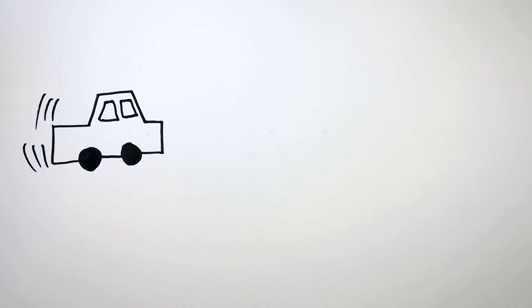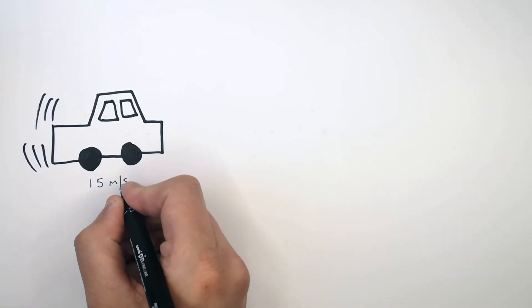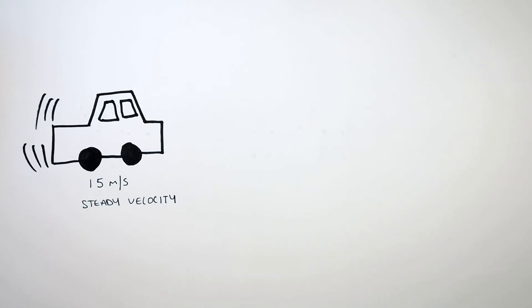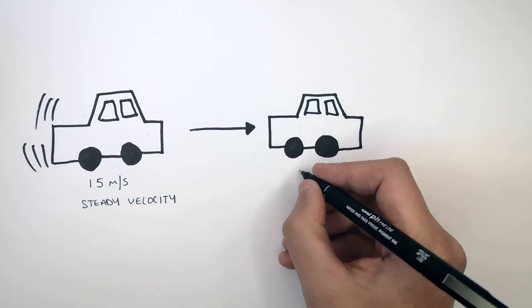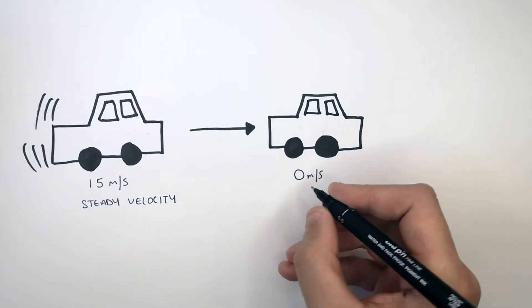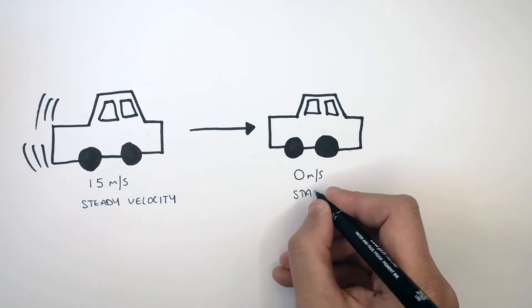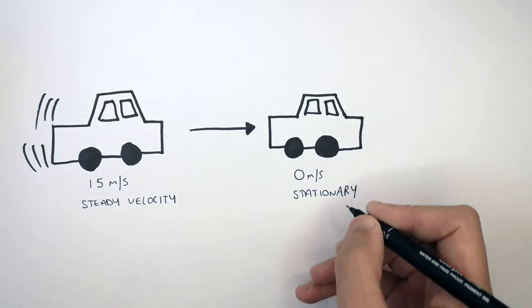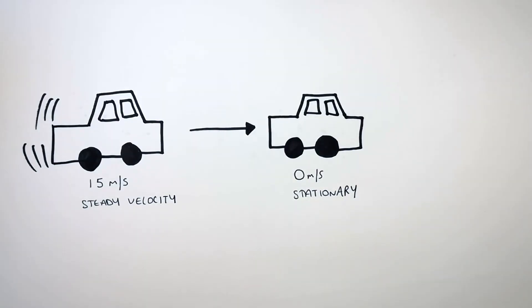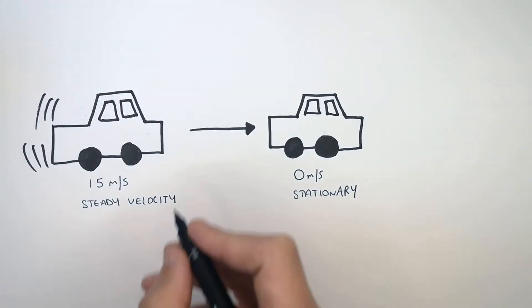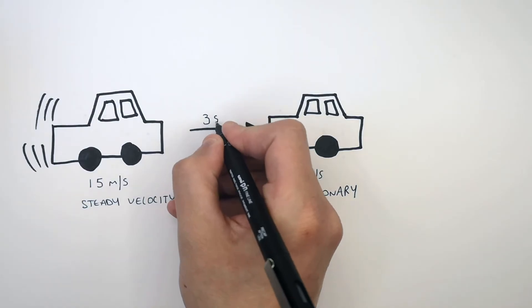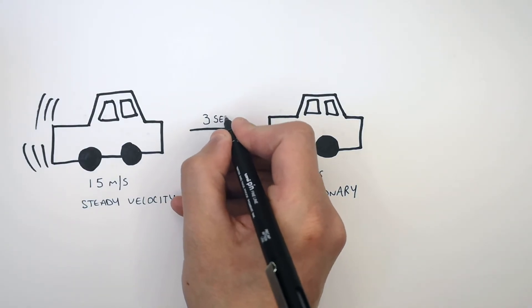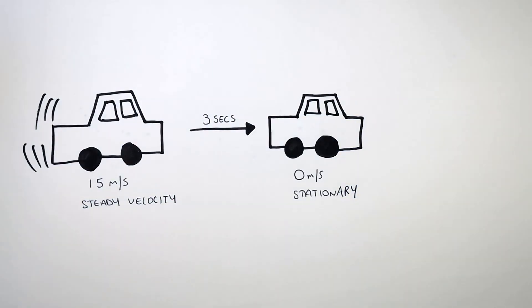The car is now moving at 15 meters per second at a steady velocity. The car is then going to slow down and decelerate to 0 meters per second and become stationary — it will not be moving anymore. It's going to take the car 3 seconds to decelerate from 15 meters per second to 0 meters per second. Let's calculate the acceleration of this car as it decelerates.